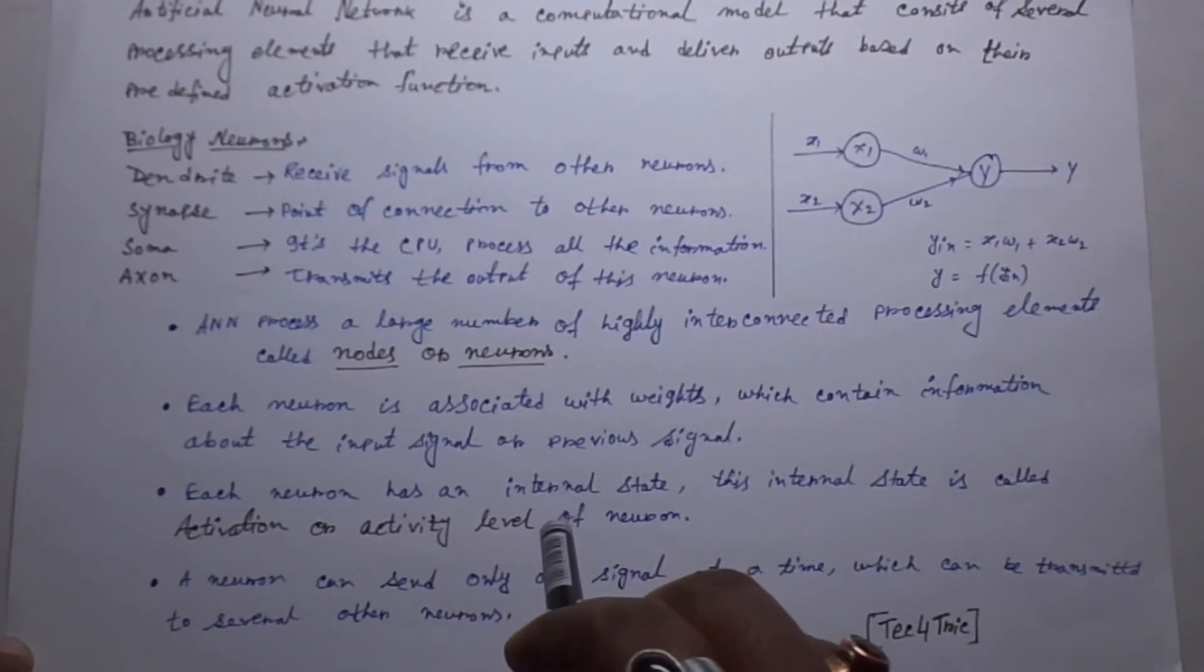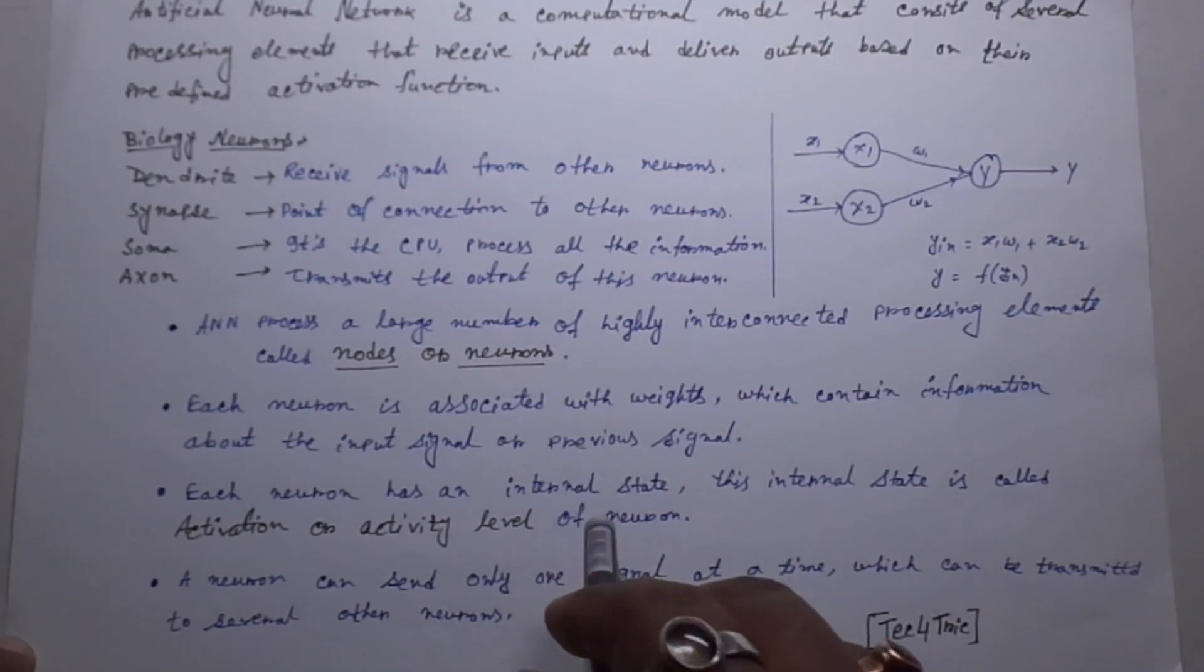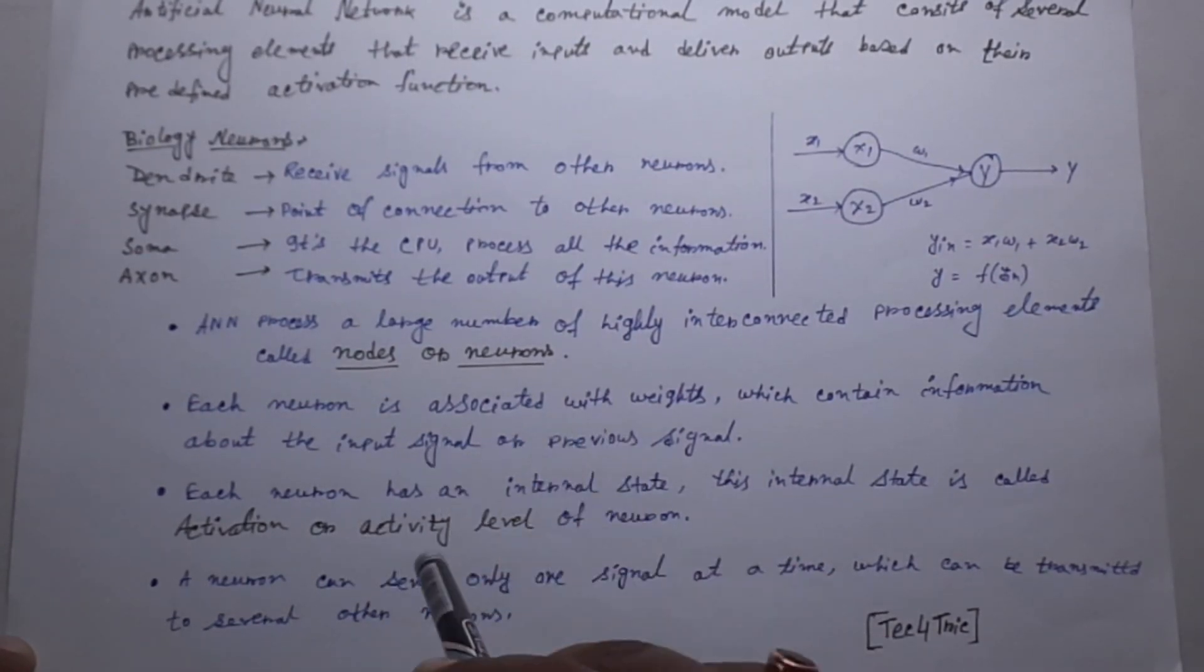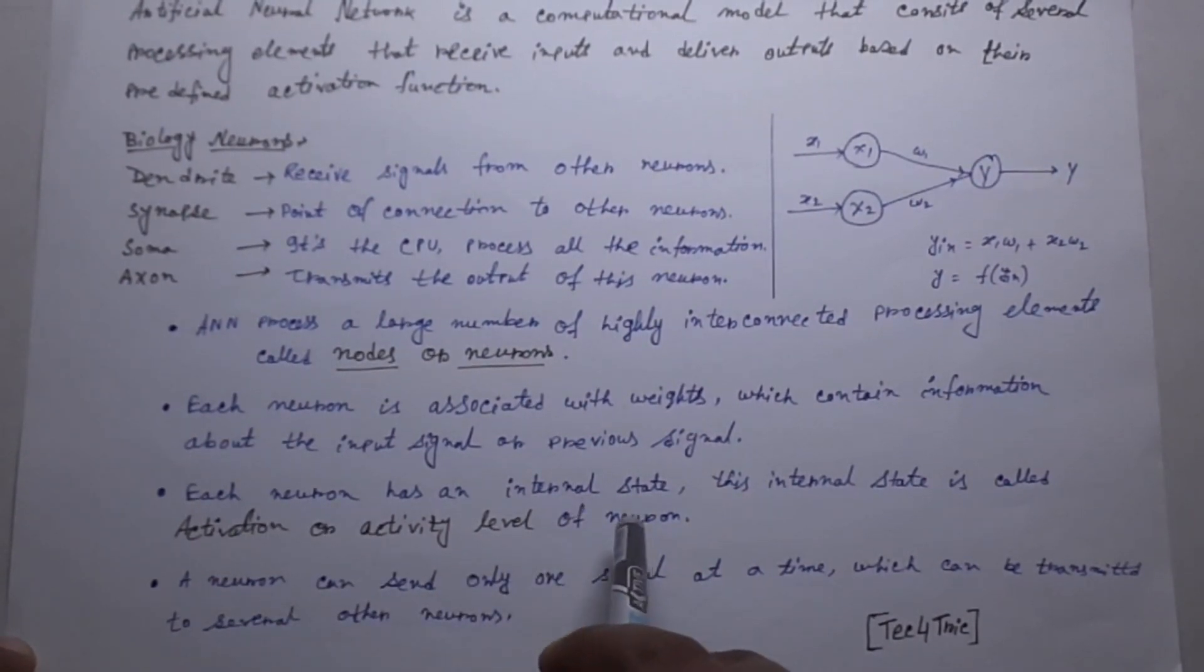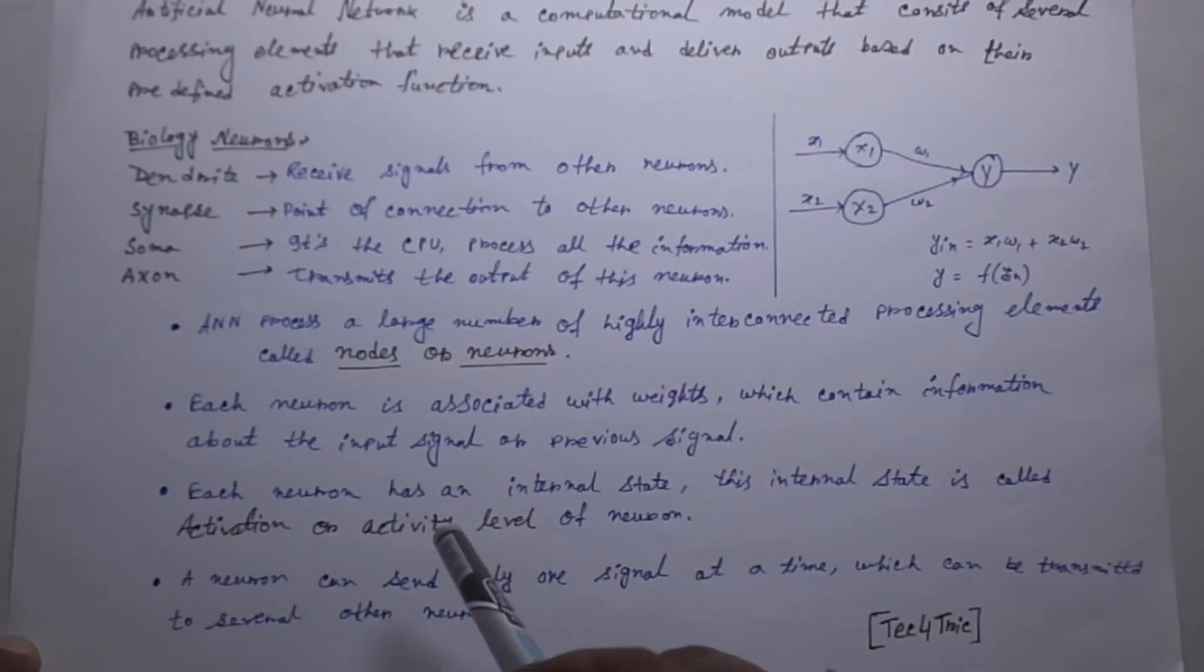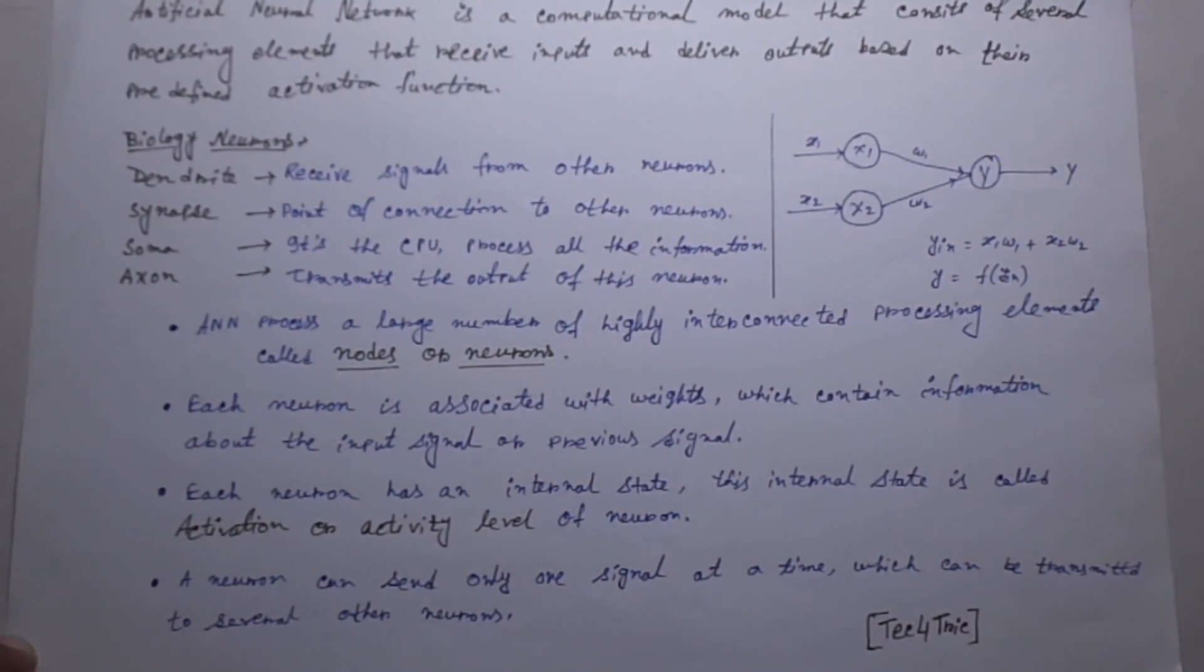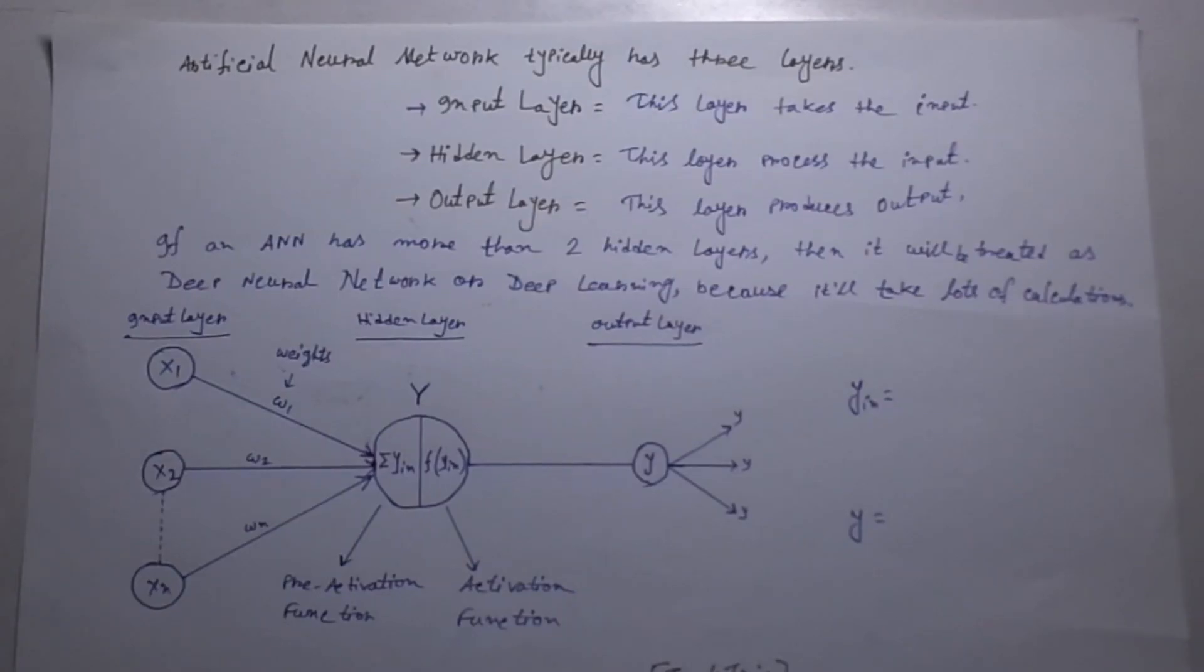Suppose I have a multiple layer network. So the last layer will get the input from the output of the previous layer. Each neuron has an internal state called activation or activated level of neuron. A neuron can send only one signal at a time which can be transmitted to several other neurons. This is how the artificial neural network works.